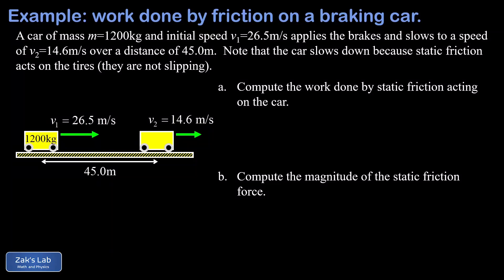In this video we're looking at the work-energy theorem applied to a braking car. We're given a car with a mass of 1200 kilograms, initial speed of 26.5 meters per second, and it applies the brakes and slows down to 14.6 meters per second over a distance of 45.0 meters.